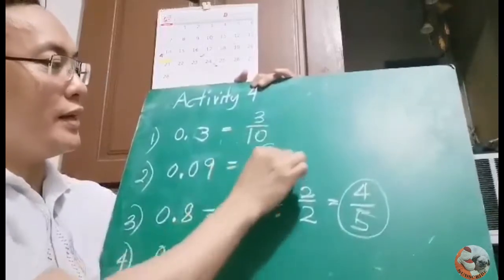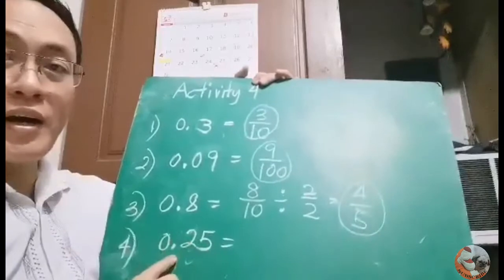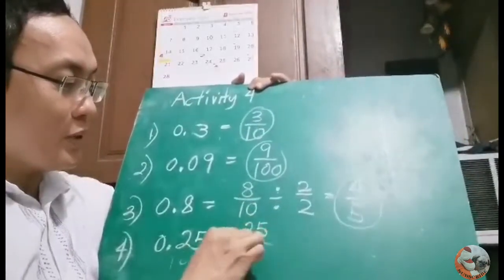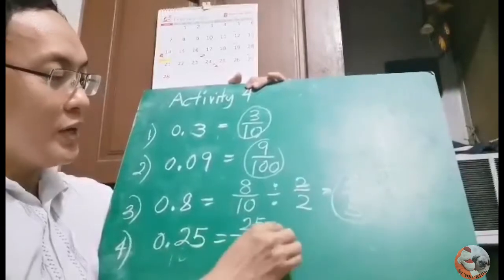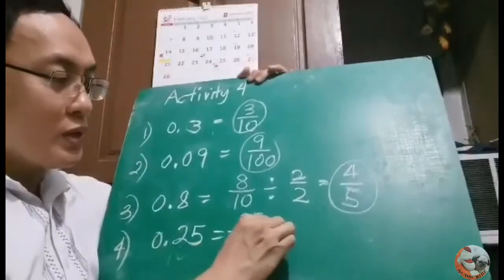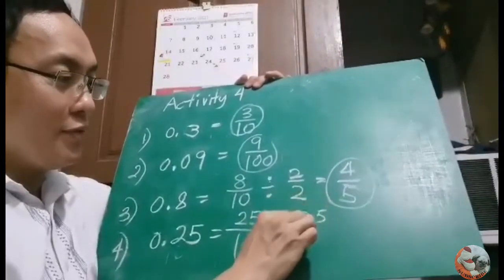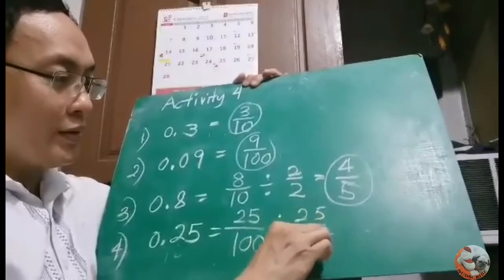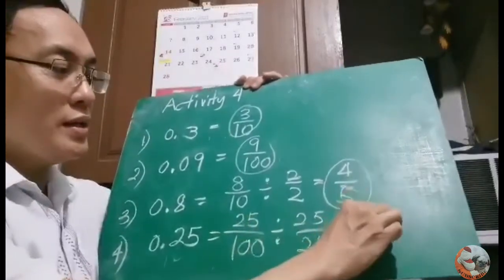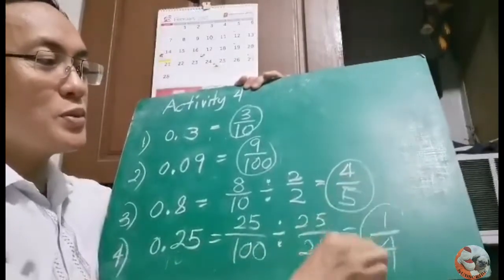For 0.25 — this is 25 hundredths, so it is 25 over 100. This is not yet in lowest terms, so divide by the GCF of 25. 25 divided by 25 is 1, and 100 divided by 25 is 4. The answer is 1 fourth.